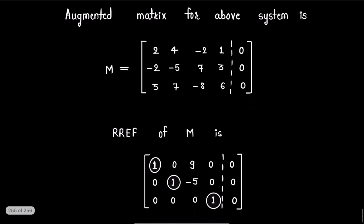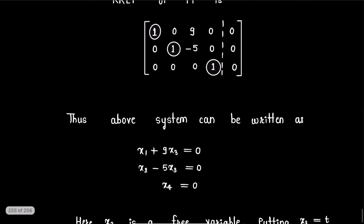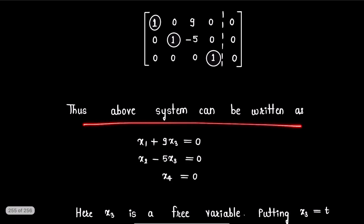Further, applying certain row operations, we get row reduced echelon form of this augmented matrix M as this matrix. So, above system can be written as x1 plus 9x3 equals 0, x2 minus 5x3 equals 0, and x4 equals 0.